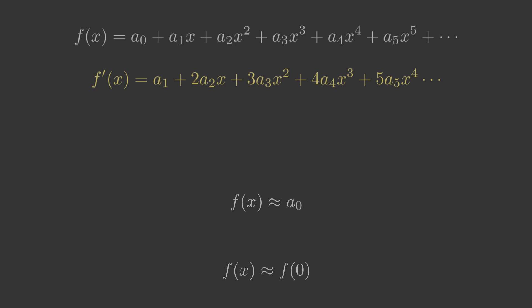Differentiating a2x squared gives 2a2x by the power rule. Similarly a3x cubed becomes 3a3x squared, a4x to the 4 becomes 4a4x cubed, and a5x to the 5 becomes 5a5x to the 4.